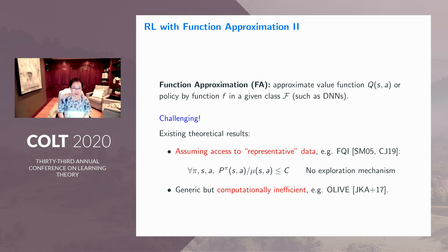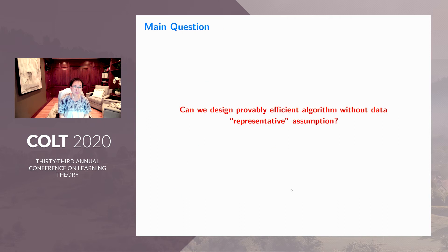The second class of theoretical work is more generic—they work for different function classes. However, they are not computationally efficient. For example, papers on algorithms with low Bellman rank provide sample-efficient algorithms, but they're not computationally efficient. This brings us to the main question of this paper: Can we design provably efficient algorithms without those artificial data representative assumptions? We just want a provably efficient algorithm with function approximation.